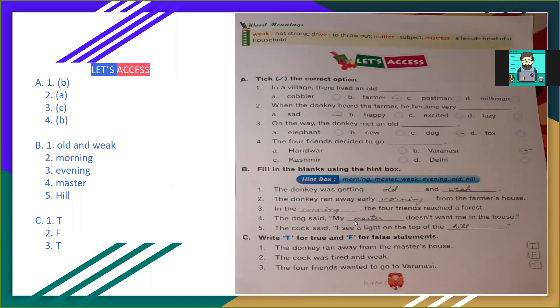The donkey said my master doesn't want me in the house. Dog bolta hai ki meri malik mujhe apne ghar mein nahi chahta hai. Fourth, master. Fifth, the cock said I see a light on the top of the hill. Cock bolta hai ki main ek pahaar ke top pe, matlab uchhai par ek light dekh raha hoon.